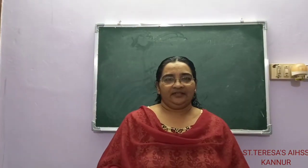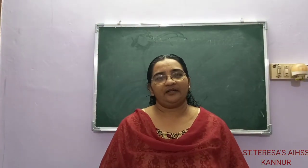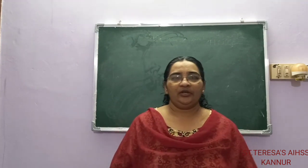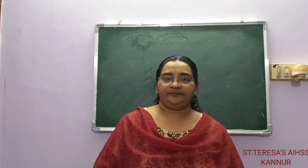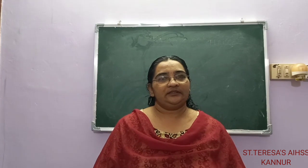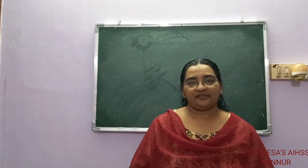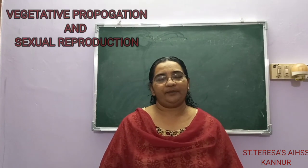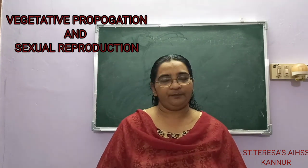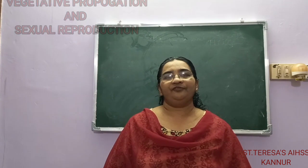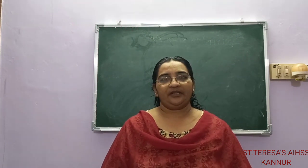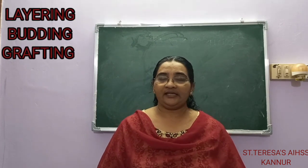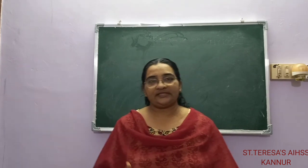Good morning children, we are going into the last part of the lesson 'Reaping Gold from Soil'. In the previous classes, we learned that there are two types of ways in which we can propagate a plant — through vegetative propagation and through sexual reproduction. The different ways of vegetative propagation that we learned are layering, budding, and grafting.